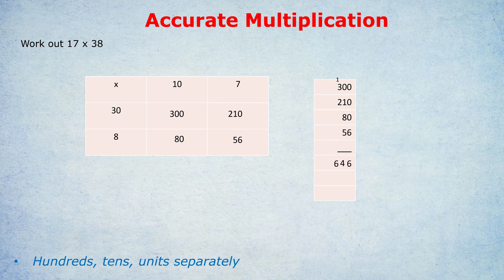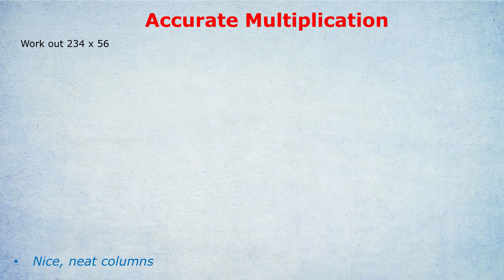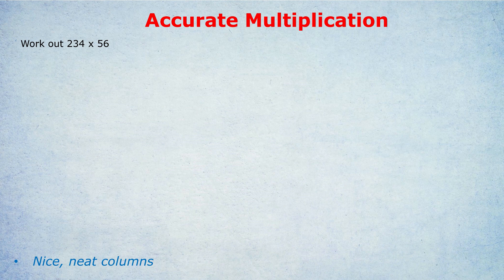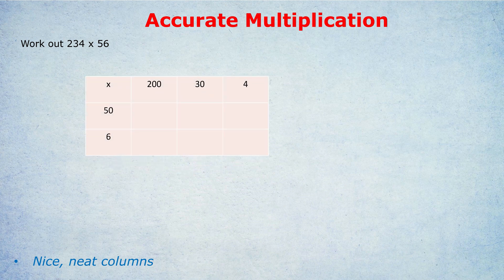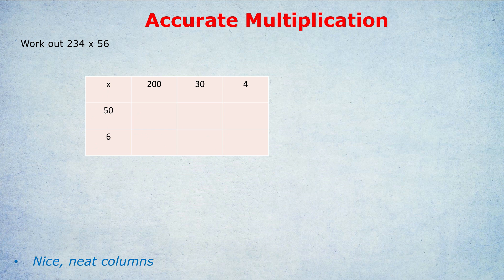We're going to do 234 times 56, except this time I'm going to go at the realistic pace that I would go at to show you how it works. Okay, we draw out the table with a separate row for 50 and 6, and separate columns for 200, 30, and 4. We split it up like that.